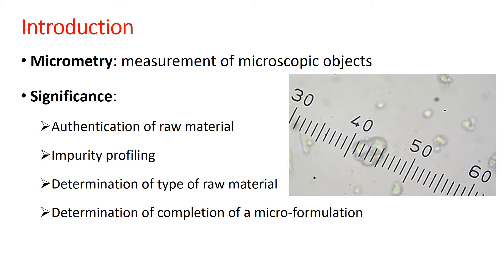The importance of this practical is in authentication of raw material — that means to determine whether the raw material provided to us is pure or has been adulterated. It also helps in impurity profiling, as impurities in the raw material are easily visible and distinguishable under the microscope compared to the authentic crude drug.